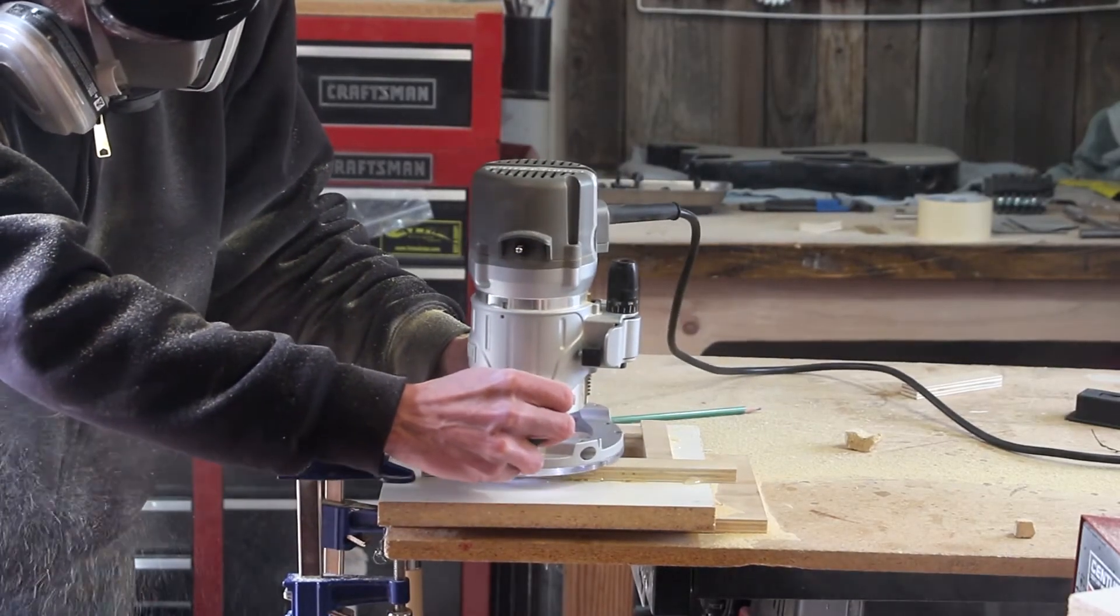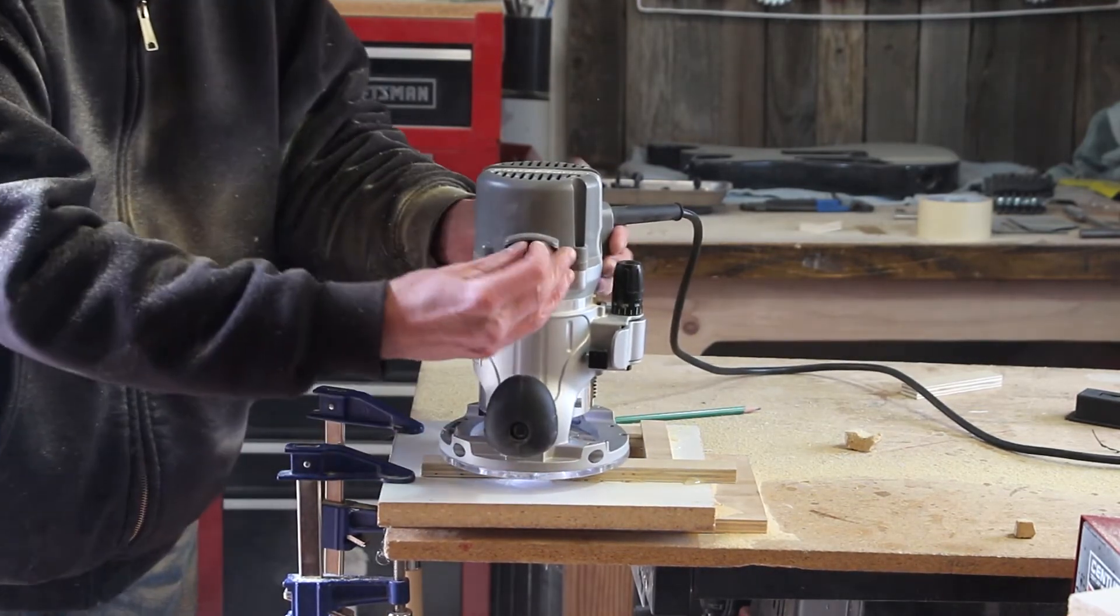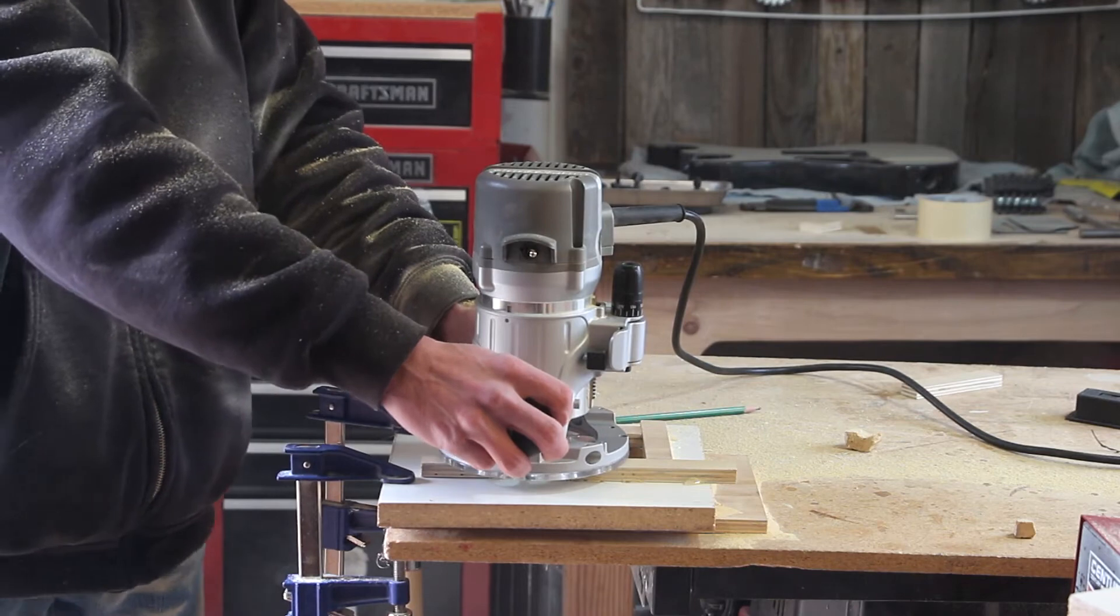Now I've got the piece clamped down nice and secure. I've got a scrap piece of plywood underneath and I'm just going to use a flush trim bit with a guide bearing to route out this cavity. It says MDF so make sure you wear a dust mask.